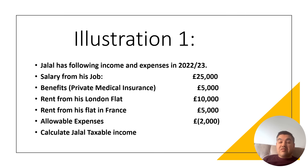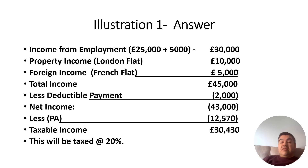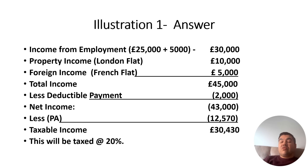Here is an example. Jalal has the following income for 2022–23: salary £25,000, private medical insurance benefit £5,000, rent from his London flat £10,000, rent from his flat in France £5,000, and allowable expenses of £2,000. All of these are non-saving income, so there is no need for a separate saving or dividend column. Total income less deductible payments of £2,000 gives net income of £43,000. Less personal allowance of £12,570 gives taxable income. Jalal falls within the basic rate band (limit £37,700) so he is taxed at 20%.